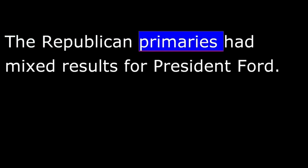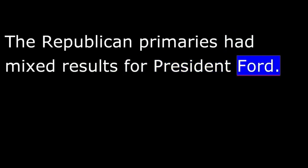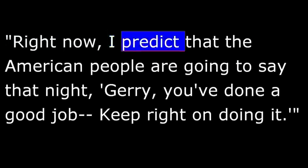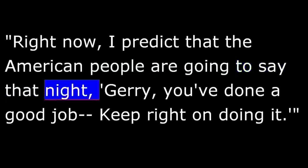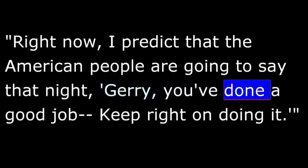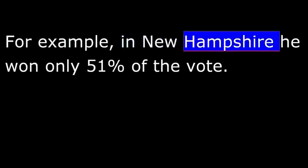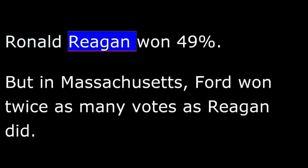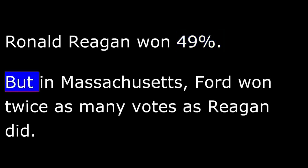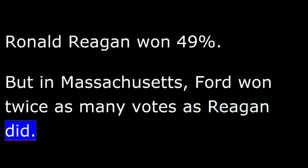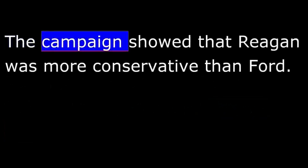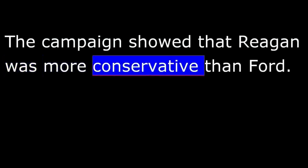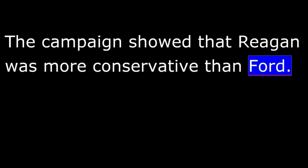The Republican primaries had mixed results for President Ford. For example, in New Hampshire he won only 51 percent of the vote, while Ronald Reagan won 49 percent. But in Massachusetts, Ford won twice as many votes as Reagan did. The campaign showed that Reagan was more conservative than Ford. Reagan talked strongly about United States control of the Panama Canal.